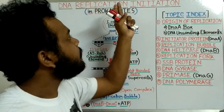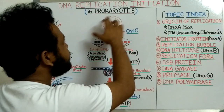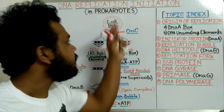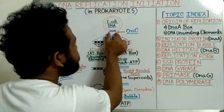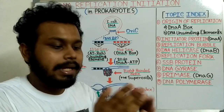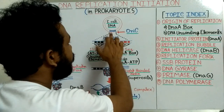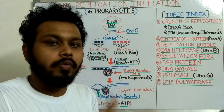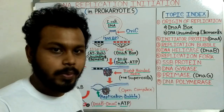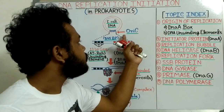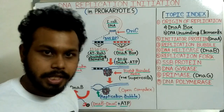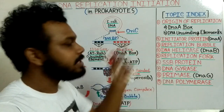In this video I am going to discuss the whole DNA replication initiation process. Suppose this is a whole E. coli DNA genome. A region is present which is known as the origin of replication — where the double-stranded DNA first gets separated into single-stranded form. This region is called the OriC region. It is a 245 base pair sequence, where 'ori' means origin and 'C' stands for chromosomal origin of replication.